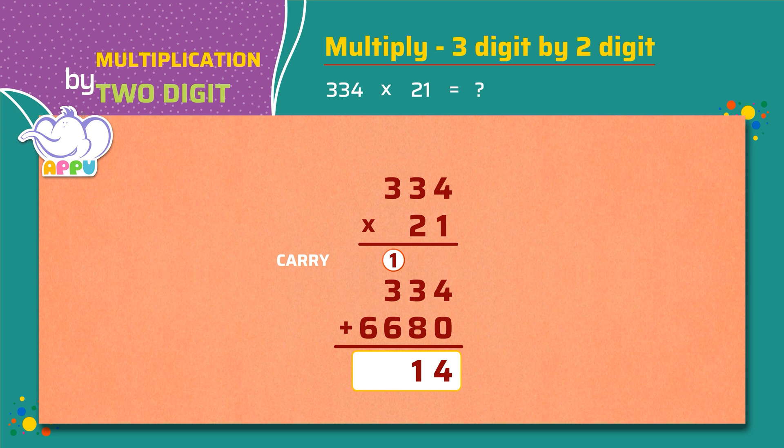1 plus 3 plus 6 equals 10. We keep 0 and carry 1. 1 plus 0 plus 6 equals 7. So the answer is 7,014.